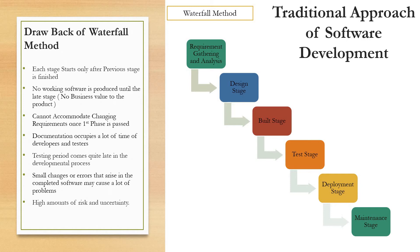Let me explain the stages and drawbacks of one of the well-known traditional approaches for software development called the Waterfall method. As you can see here, there are 6 stages in the Waterfall method. The first stage is requirement gathering and analysis.